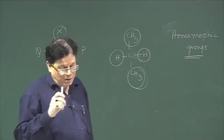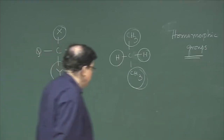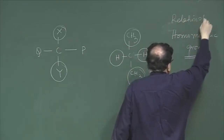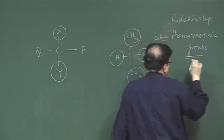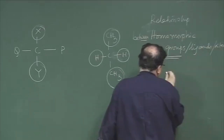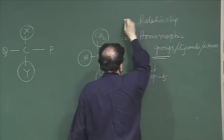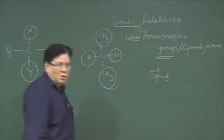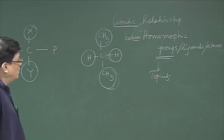Now, we want to know the relationship between these ligands, and this relationship is what is called topicity. So, topicity is the geometric or stereochemical relationship between homomorphic groups, ligands, or atoms.